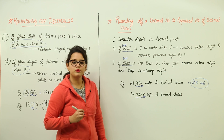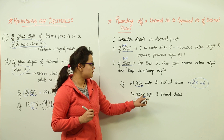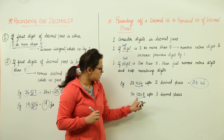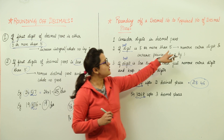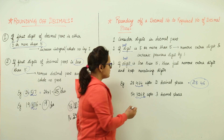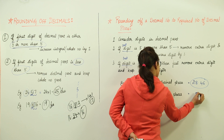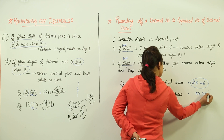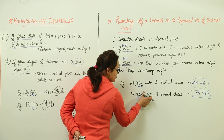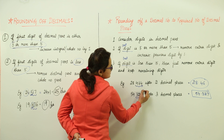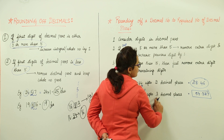For rounding to 3 decimal places, check the last digit — if it is greater than 5, remove the extra digit and add 1 to the previous digit. For example, if the last digit is 8 which is greater than 5, remove 8 and add 1 to 6, making it 7. So the result becomes 0.327. This can be done for any number of decimal places depending on what the question asks.